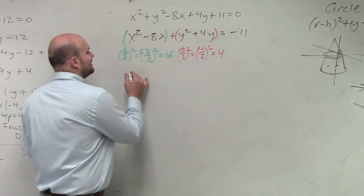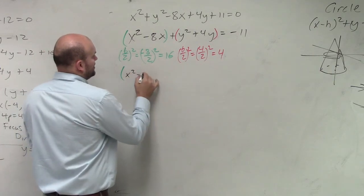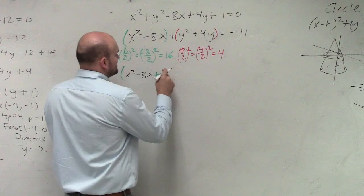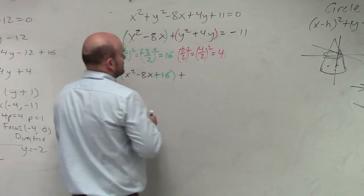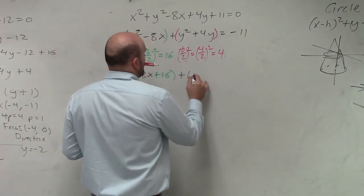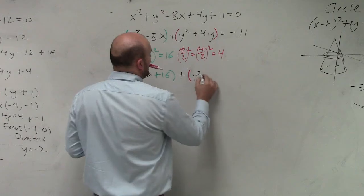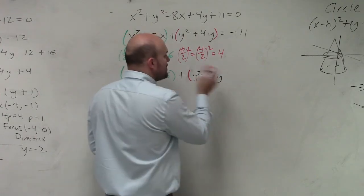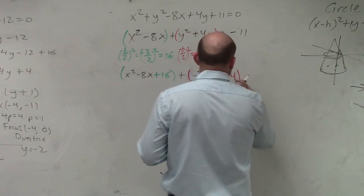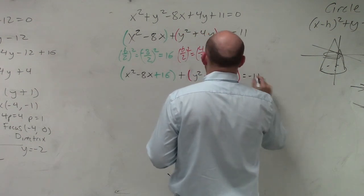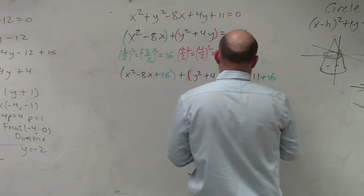So in this case, I have x squared minus 8x plus 16 plus y squared plus 4y plus 4 equals negative 11 plus 16 plus 4.